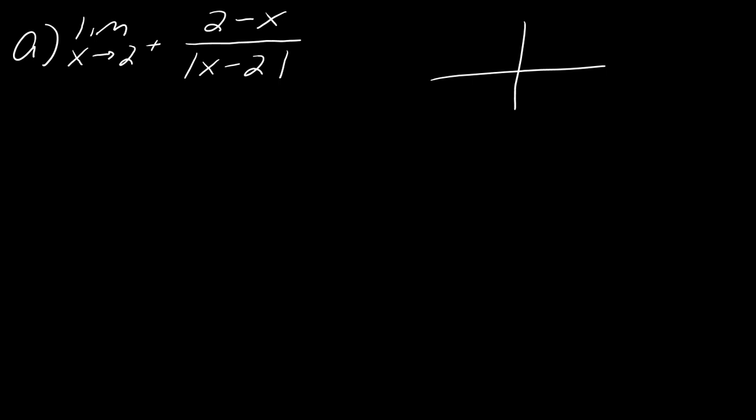So if I think about just the absolute value of X minus two, here is what that function looks like. And here's the important thing that you have to understand about this. So here at two, this is where this function changes behavior. So on this side, is this a positive slope or is it a negative slope? This side is negatively sloped versus this side, this side is positively sloped.